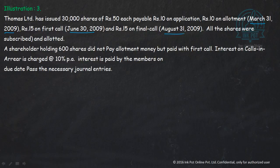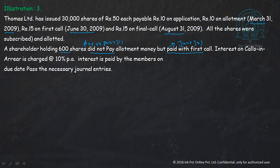All shares were subscribed and allotted, but one shareholder did not pay allotment money — it was due on March 31st but was actually paid on June 30th. Interest on calls in arrears is charged at 10% per annum. Interest is paid by the members. Due date: past journal entries.